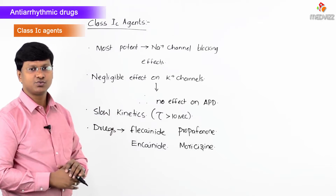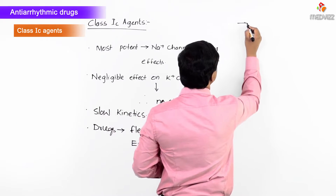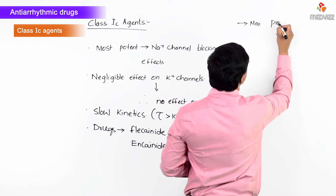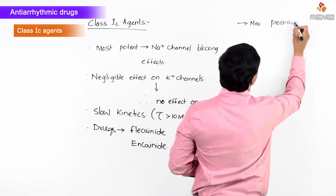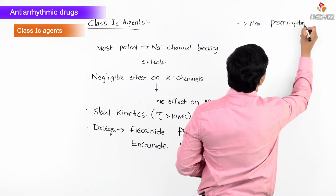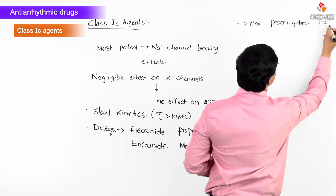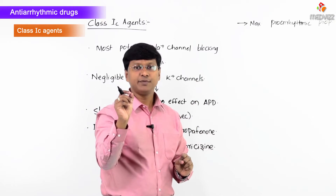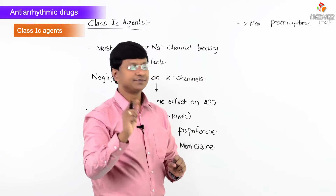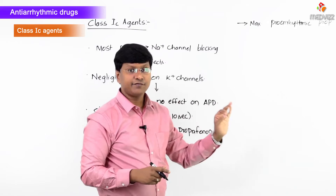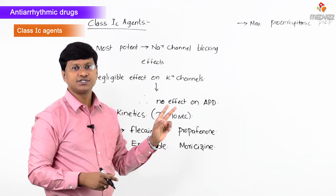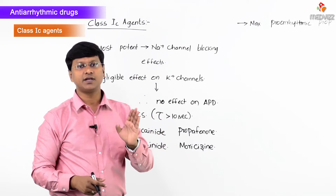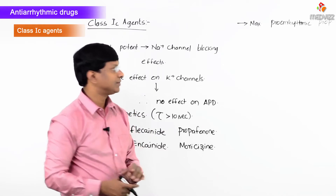An important point regarding Class 1C is that these drugs have the maximum pro-arrhythmic property. Because of this maximum pro-arrhythmic property, Class 1C agents are indicated only for resistant and life-threatening ventricular tachycardias or ventricular fibrillations.